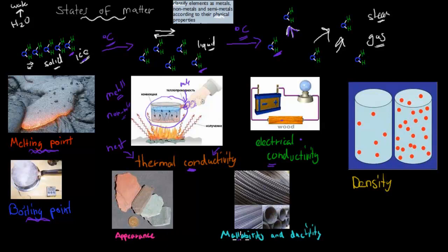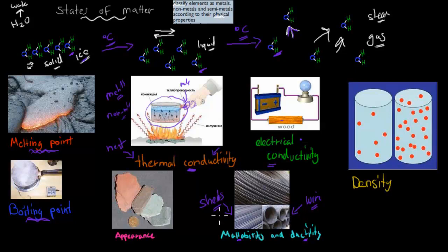We've got another physical property called malleability and ductility. Malleability is how well we can make things into sheets — think of aluminium sheets for example. Ductility refers to how well we can make things into wire. Many metals can be made into both sheets and wire. Appearance refers to whether something is shiny or dull — most metals have a shiny appearance, while most non-metals have a dull appearance.